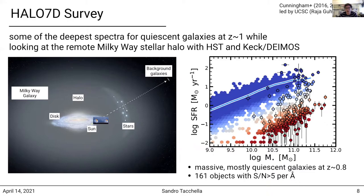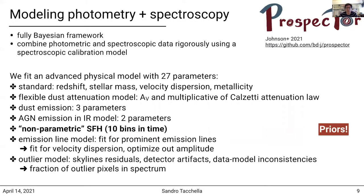I've been using Prospector, which is a sophisticated SED fitting code, to fit both photometry and spectroscopy at the same time. This is a full Bayesian framework, which allows us to really study the full covariances between different SED parameters. We are fitting advanced physical models with about 27 parameters. We are using a non-parametric star formation history, which allows us to fit diverse star formation histories in 10 non-parametric bins.